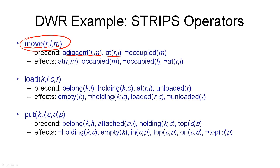There is also one negative precondition: the location M we are moving to must not be occupied by a robot when we move there — so three preconditions in total, two positive and one negative. The effects include two positive effects: the robot will be at location M, and location M will be occupied. These form the add list. The delete list contains two negative effects: location L is no longer occupied since we've moved the robot away, and the robot is no longer at location L.